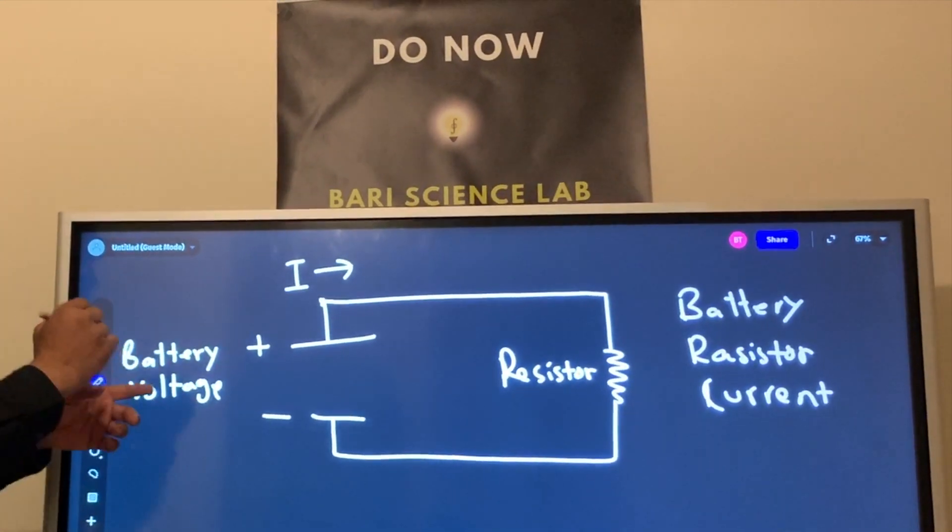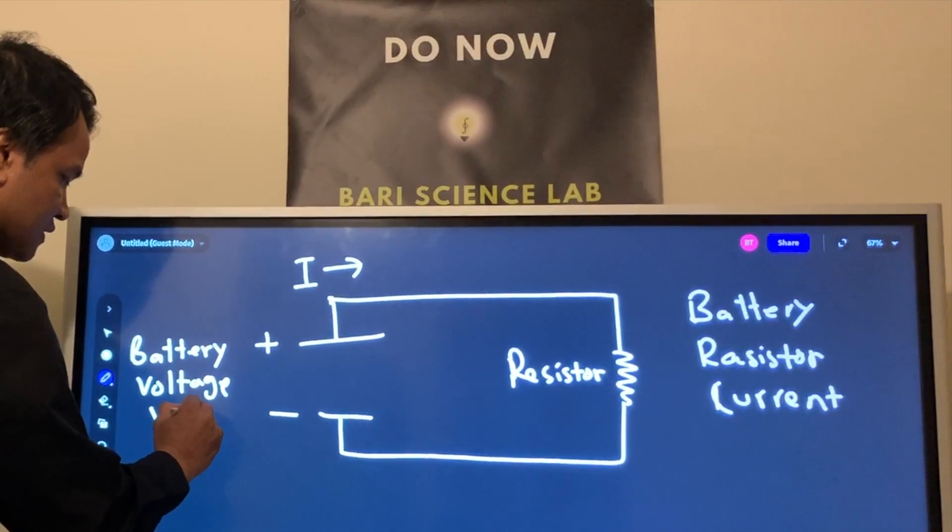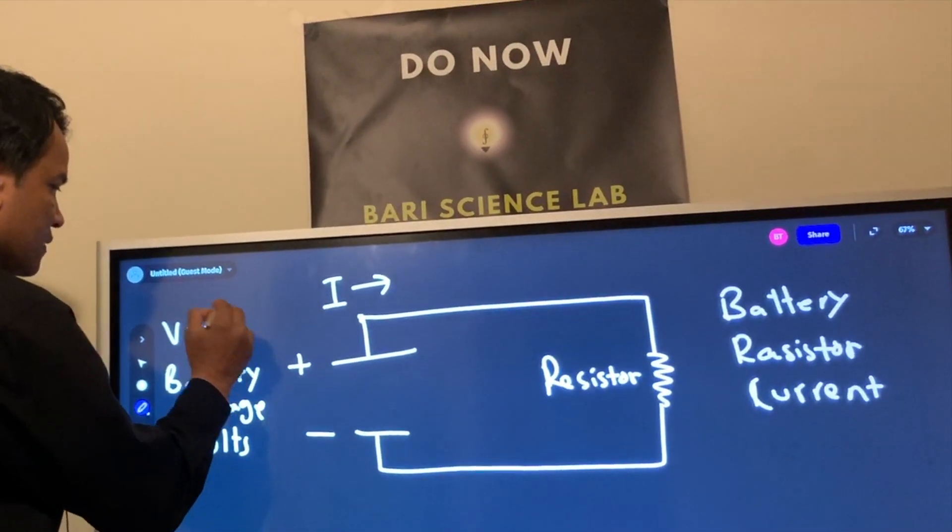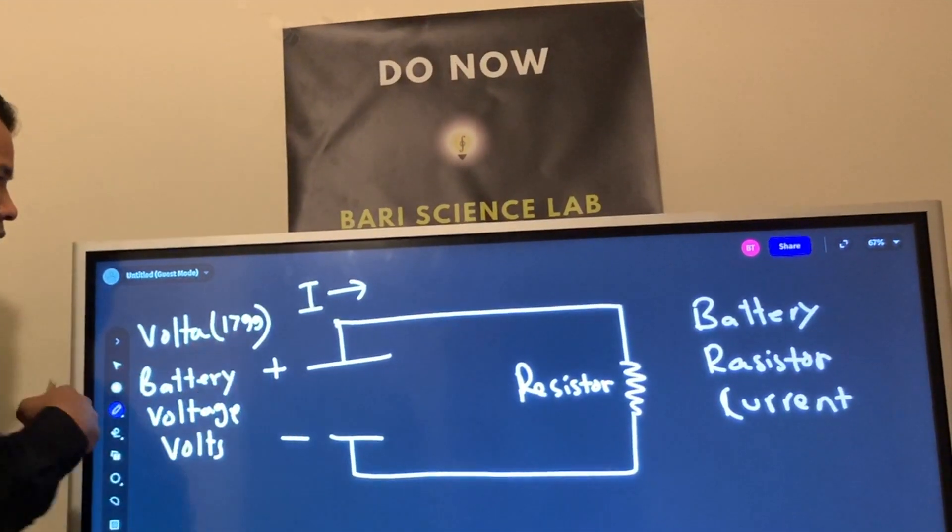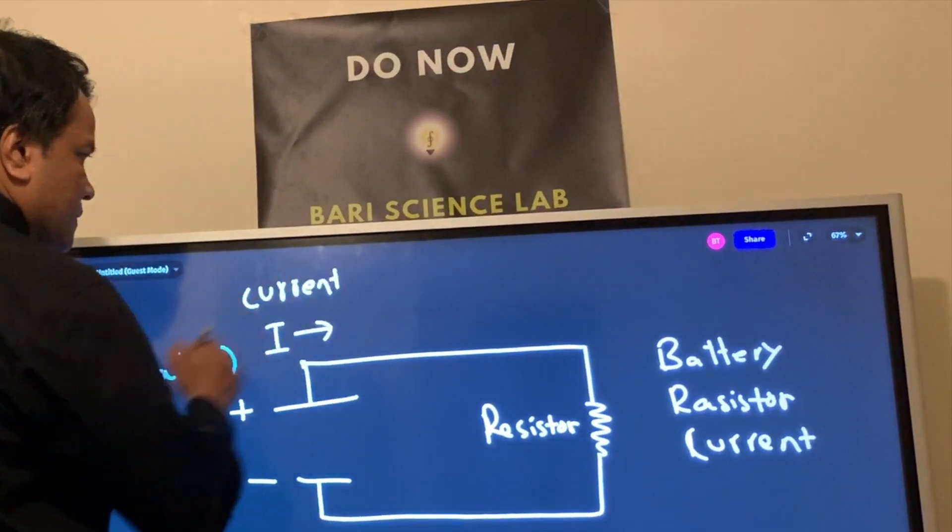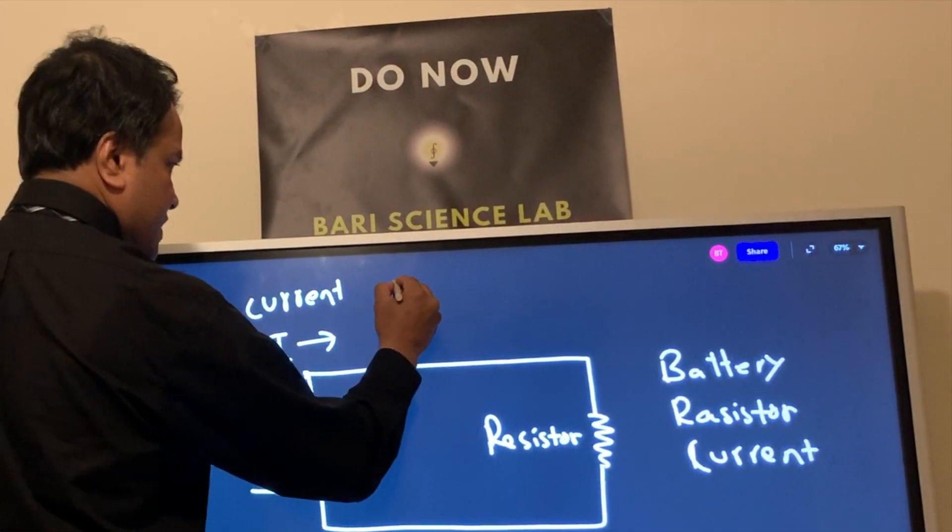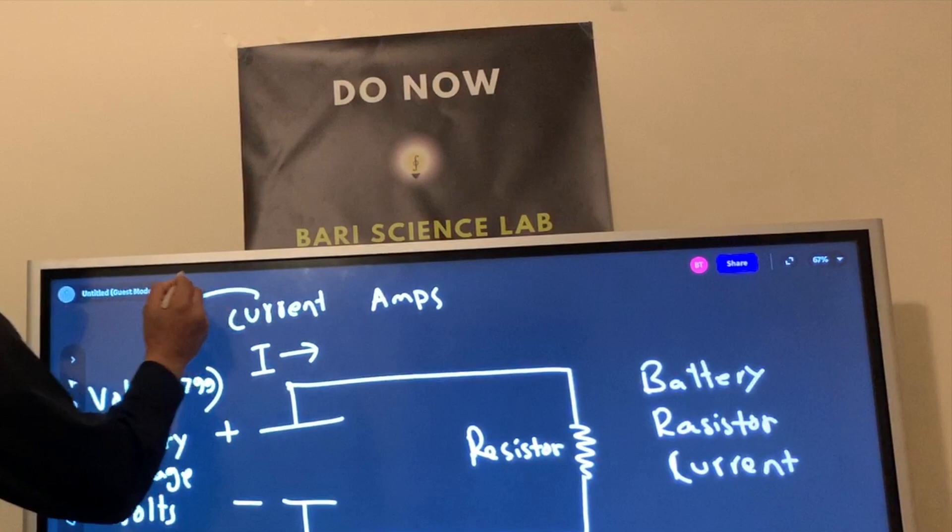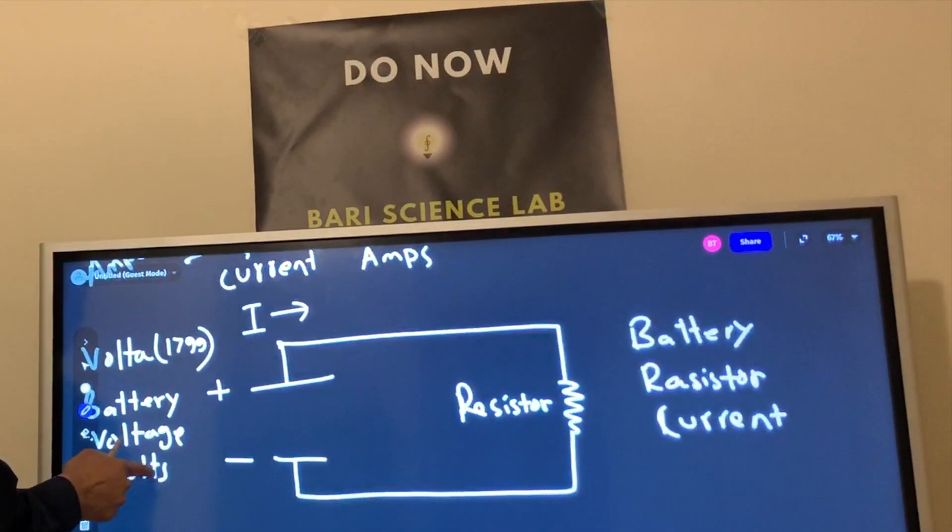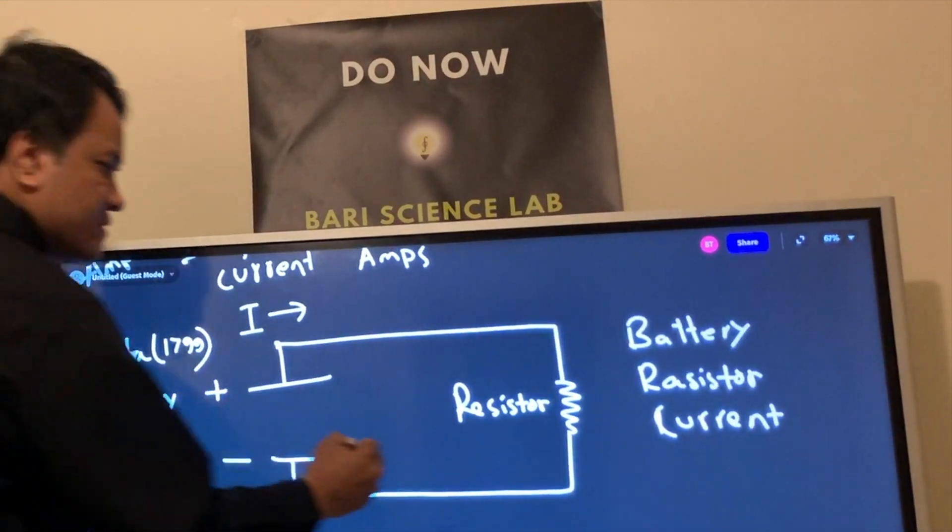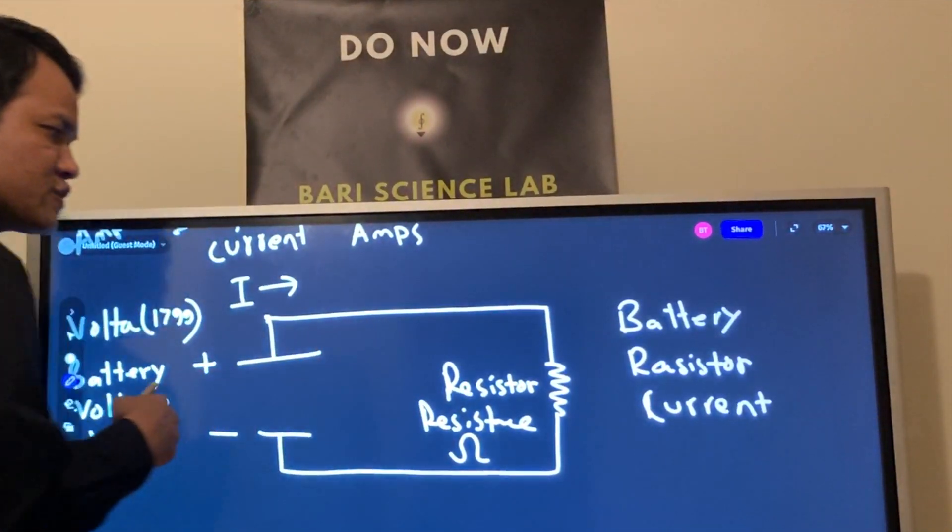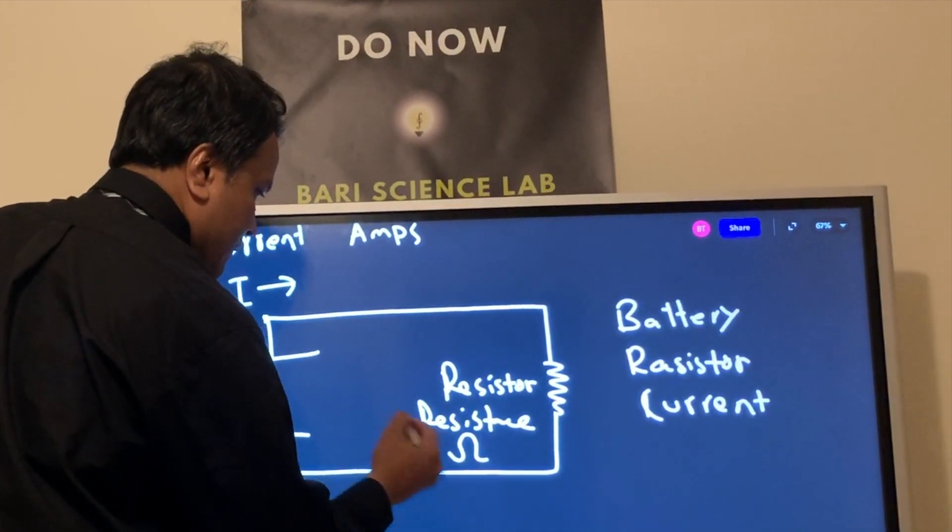The SI unit for the voltage is volt. And this was invented by Volta. The current, this is the symbol for current. The SI unit for current is amps. Current was discovered by Ampere, as I said. And then, a resistor provides resistance. There is a unit for resistance which is Ohm. And resistance was discovered by, of course, Ohm.